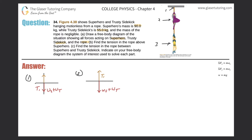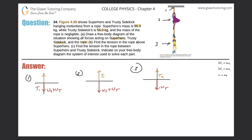At point three, which is where trusty sidekick is attached, only trusty sidekick's weight pulls down. The tension pulling upward at that point is what I'll call T2. So T2 is the tension in the rope between the superhero and trusty sidekick.